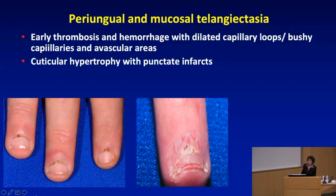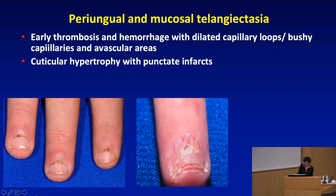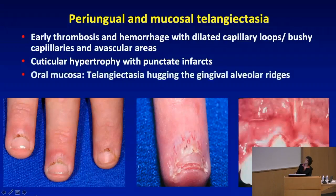We also use handheld dermatoscopes or even a good old ophthalmoscope that's sitting in every office to try to look at and magnify these features. We'll also talk about assessing the nail fold loops as a way to look at what's happening with the disease.